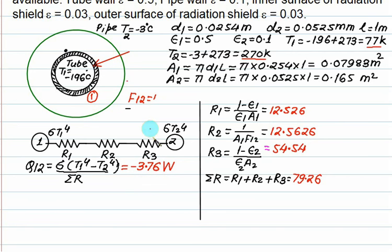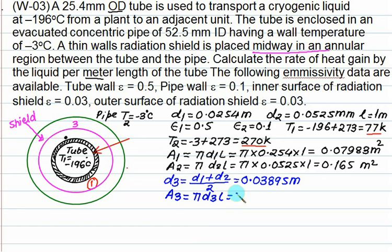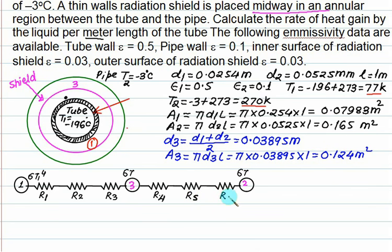Now we introduce the shield in between 1 and 2. And we will again calculate the heat transfer with shield. This shield is placed midway. If I say this one is number 3, then D3 is D1 plus D2 by 2. 0.0254 plus 0.0525 divide by 2, so diameter is 0.03895 meters. We can calculate area A3. Area A3 is pi D3 L, 0.03895 equals to 0.124 meter square. Now we will develop the network for this.